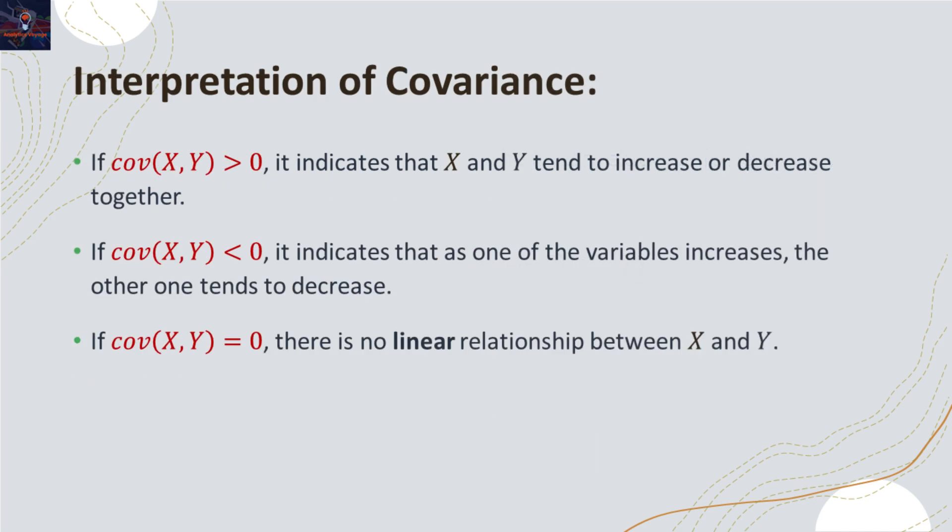Positive covariance implies that two variables increase or decrease together. Negative covariance means that as one variable increases, the other one tends to decrease.